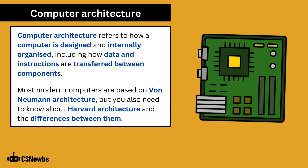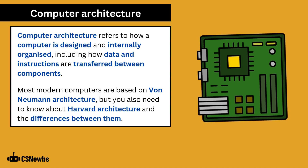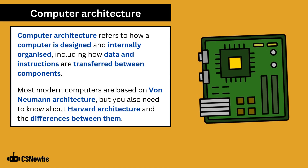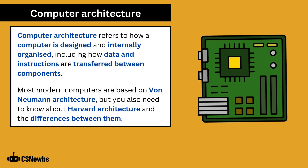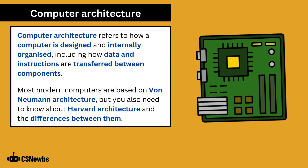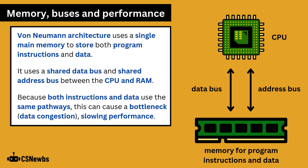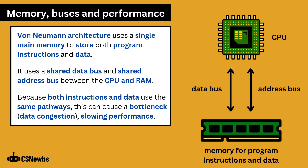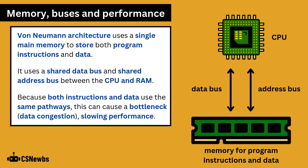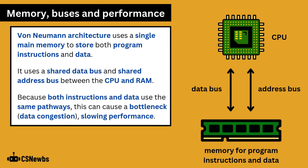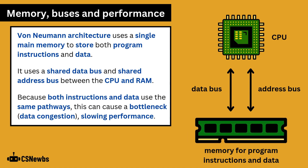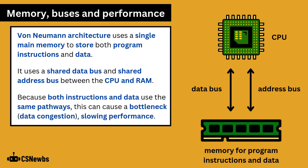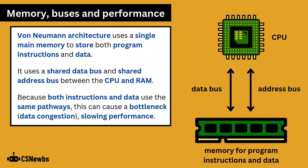You also need to be aware of the features of contemporary architecture, which is covered in a separate video. Von Neumann architecture uses a single main memory to store both program instructions and data. It uses a shared data bus and shared address bus between the CPU and RAM.